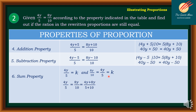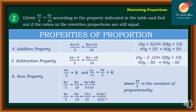So we have 4y plus 8y all over 5 plus 10, adding the numerators and denominators together. That gives 12y over 15. The greatest common factor between numerator and denominator is 3, so factoring out 3 results in 4y over 5, which is the constant of proportionality. Therefore we still have a proportion using all 6 properties of proportion, given that 4y over 5 is equal to 8y over 10.